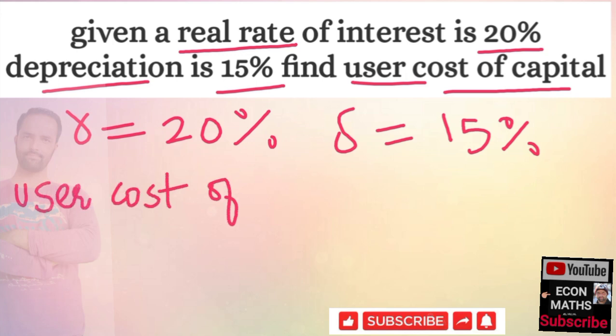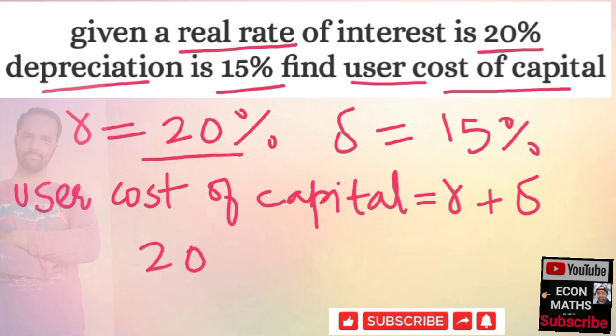What we also call the rental cost of capital is equal to the real interest rate plus the depreciation of capital. Real interest rate is 20% and the depreciation is 15%, that means the user cost of capital would be 35%.